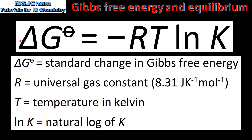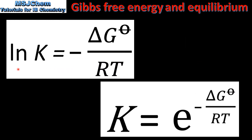This equation shows the relationship between the standard change in Gibbs free energy and the equilibrium constant K. In this equation we have the standard change in Gibbs free energy, the universal gas constant R, the temperature in Kelvin, and the natural log of the equilibrium constant K. Rearranging gives: ln(K) = −ΔG°/(RT), and therefore K = e raised to the power of −ΔG°/(RT).